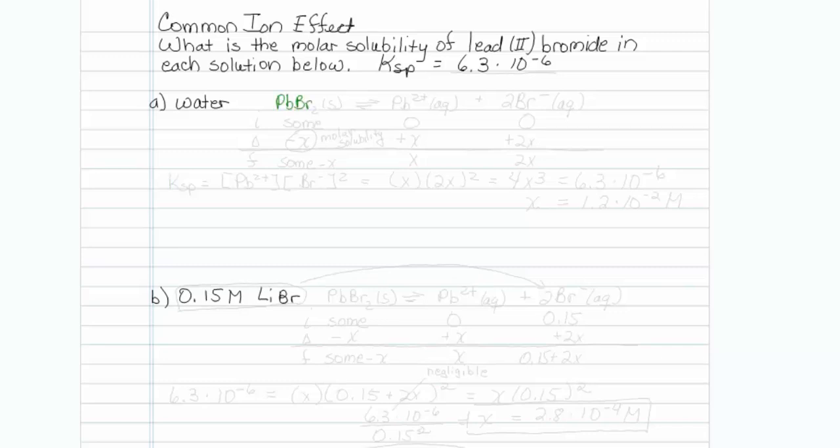Lead bromide, solid, when put into water makes a little bit of lead 2 plus and a little bit of 2 bromides. When we initially start we have some solid and none of either ion. This will be minus x, plus x and plus 2x, and when we are finished we will have some minus x, x and 2x.